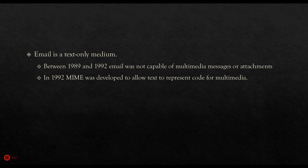Email, as mentioned earlier in the timeline, is a text-only medium. Between 1989, when email was invented, and 1992, email was not capable of multimedia messages or attachments. So in 1992 we developed something called MIME, which now allowed text to represent multimedia. There would be a whole mishmash of text characters that meant nothing to you and me, but the MIME software in the email program was able to convert that text into a picture, for example.